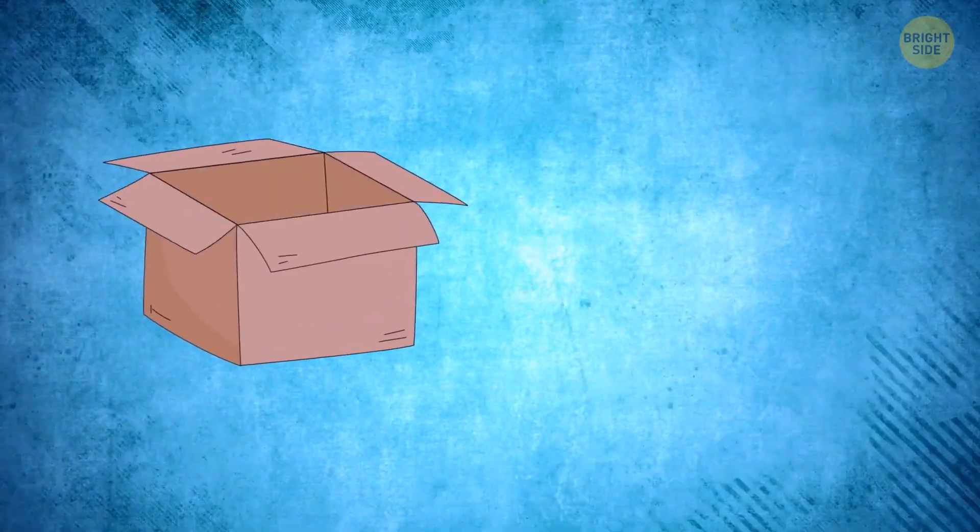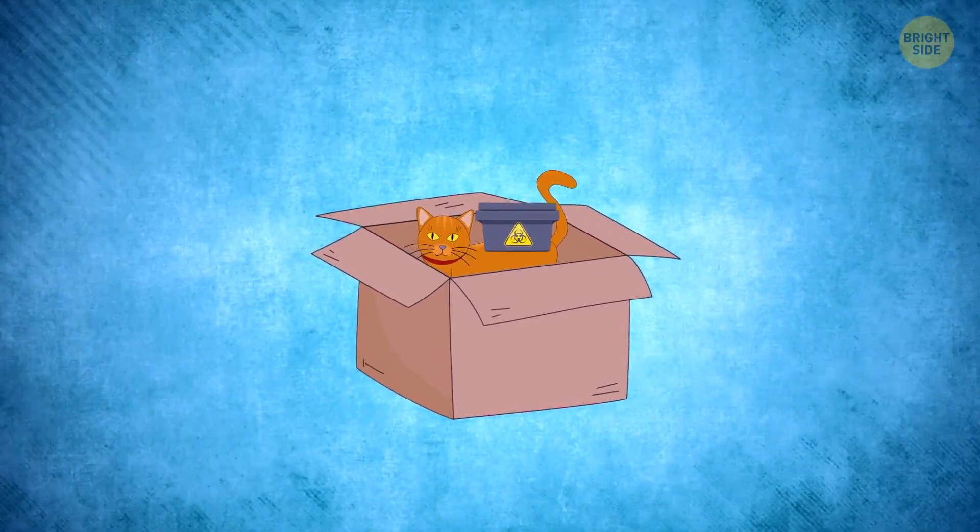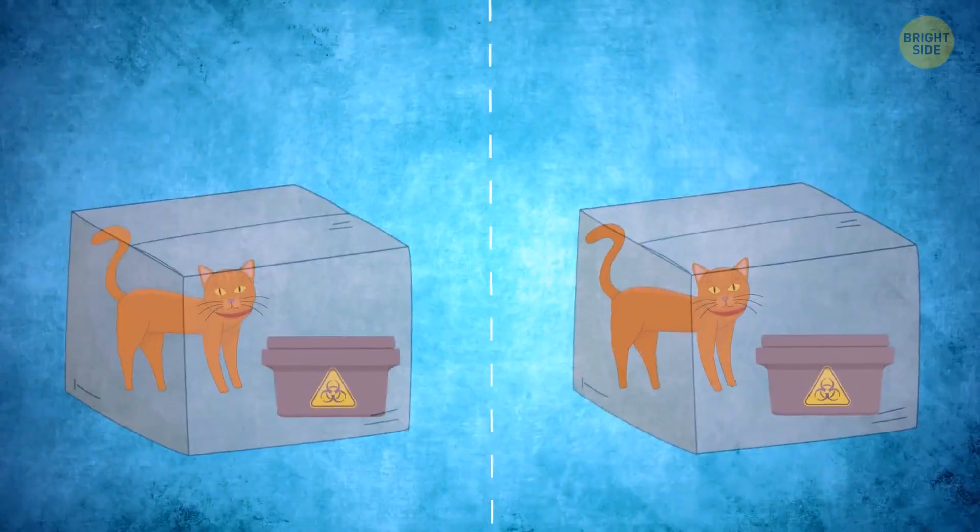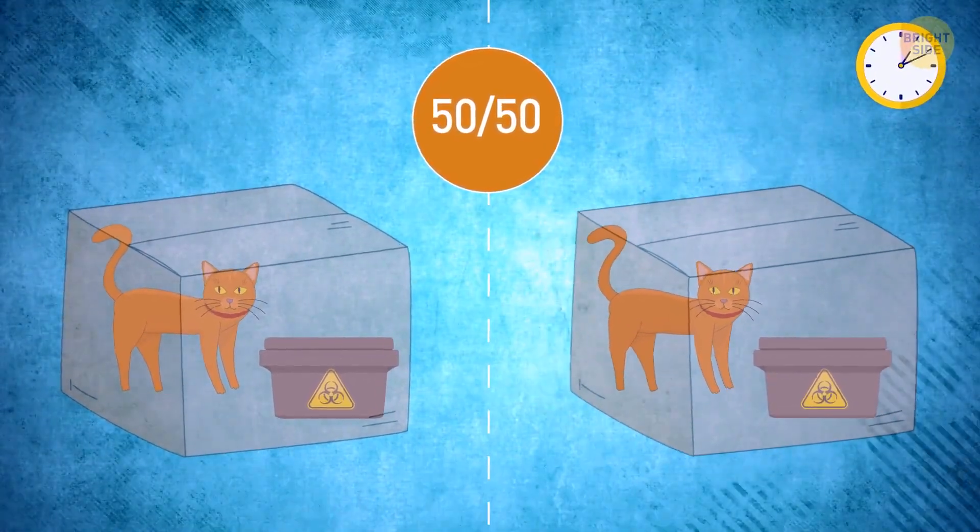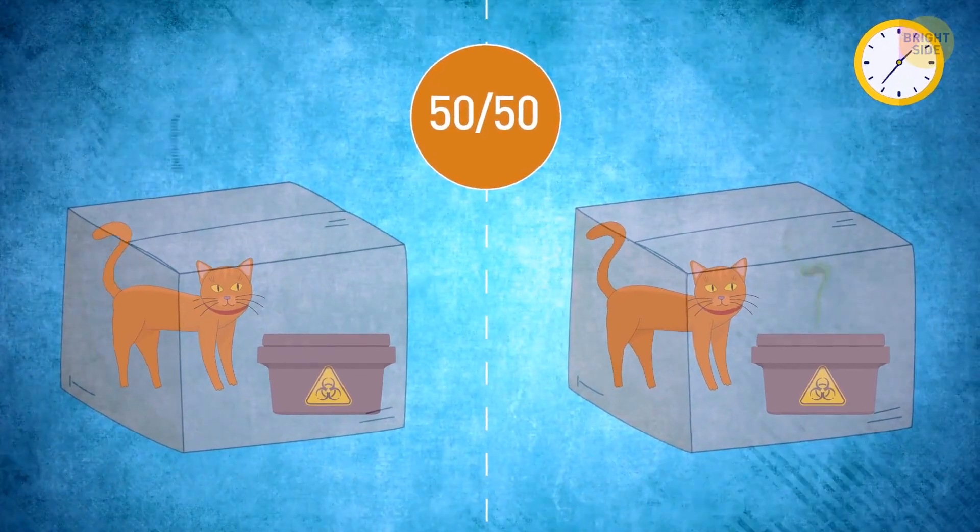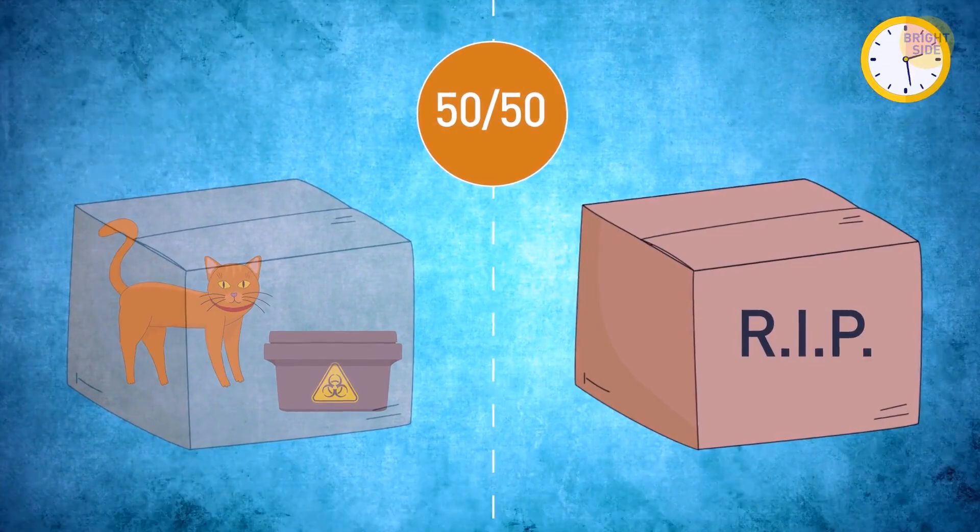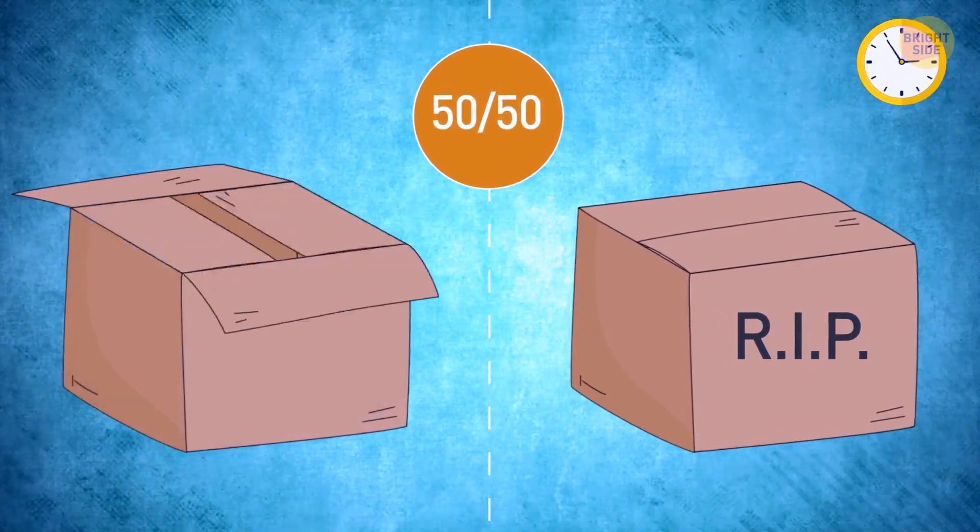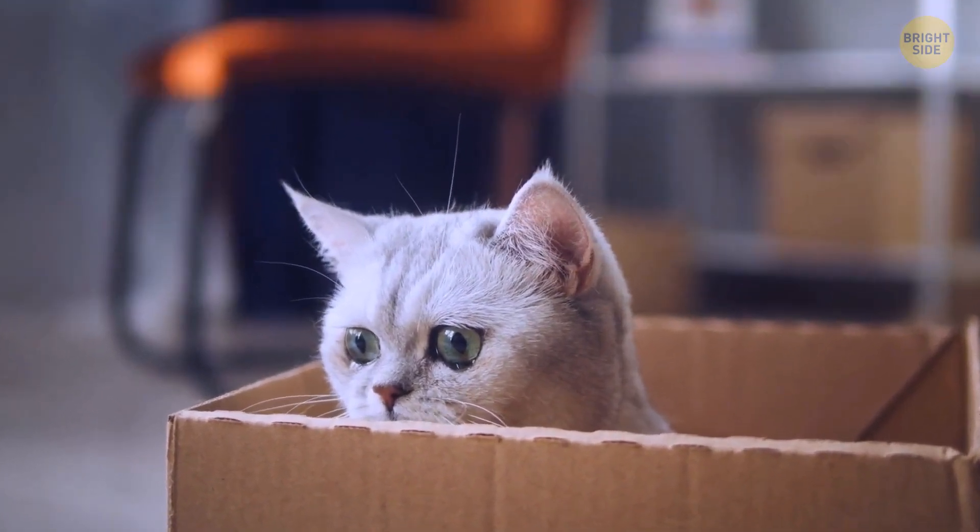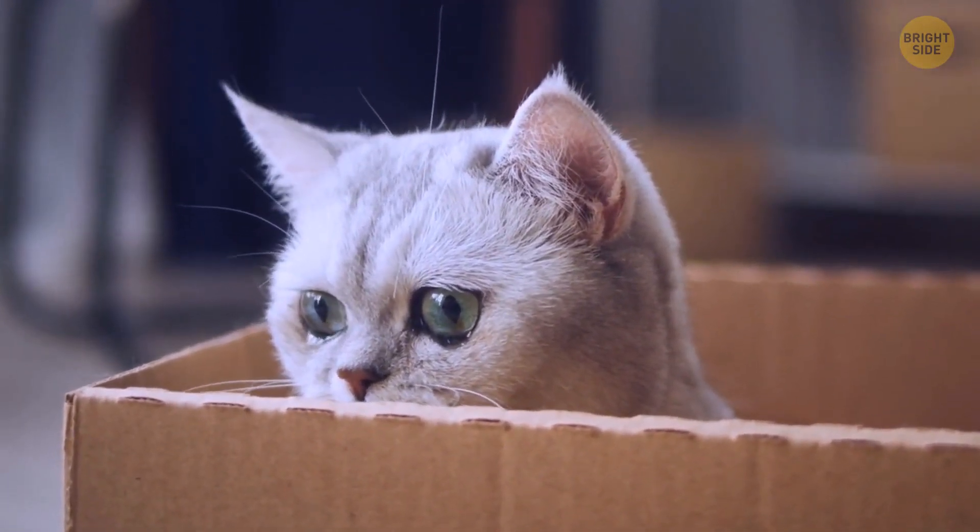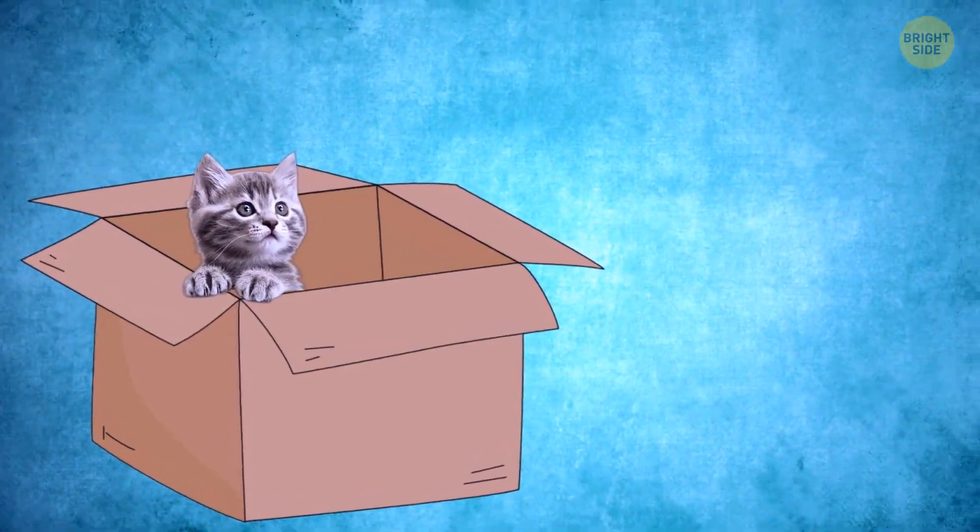First of all, we have a box and a cat. In the box there's a container with toxic gas and a special mechanism. Every hour there's a 50% chance that this mechanism will either open the gas container or not. If it happens, the poisonous gas will be released and the poor cat won't make it. If this doesn't happen, the cat will remain alive and well. Don't worry, this was a purely hypothetical experiment. No cats were harmed in the process.